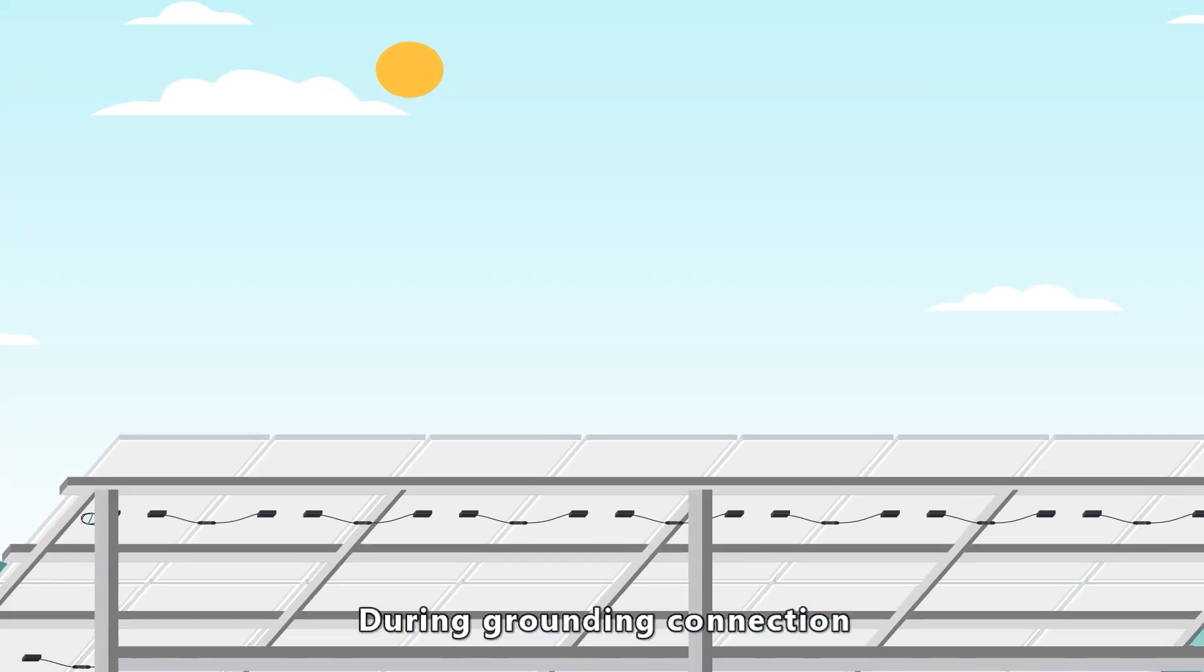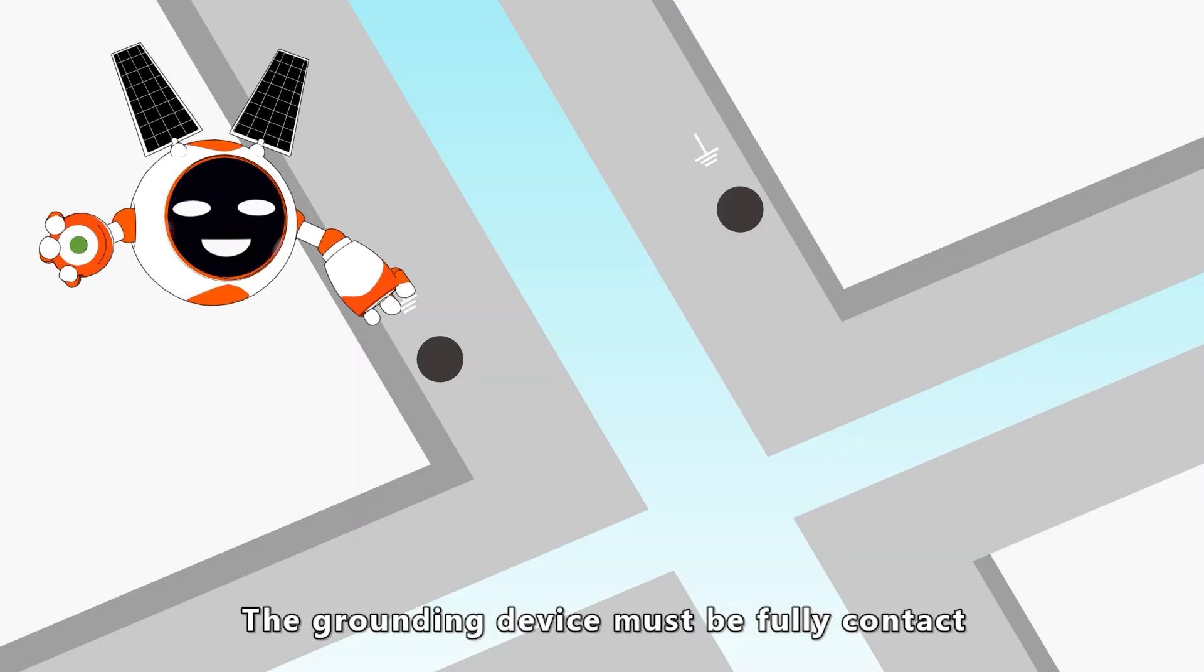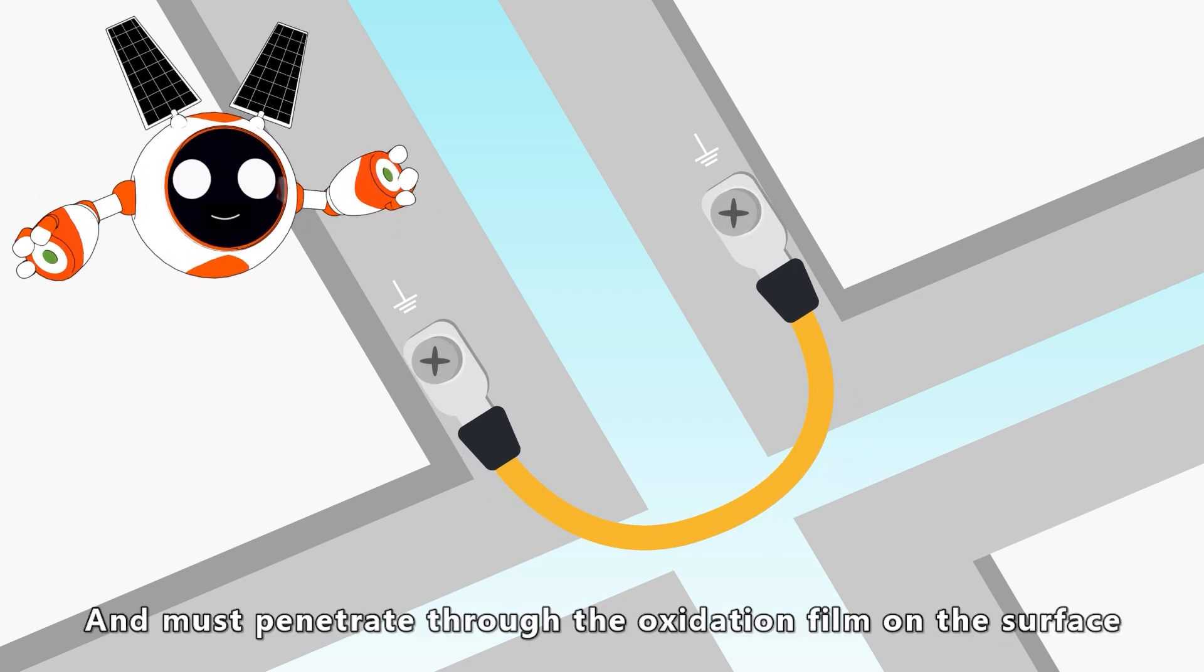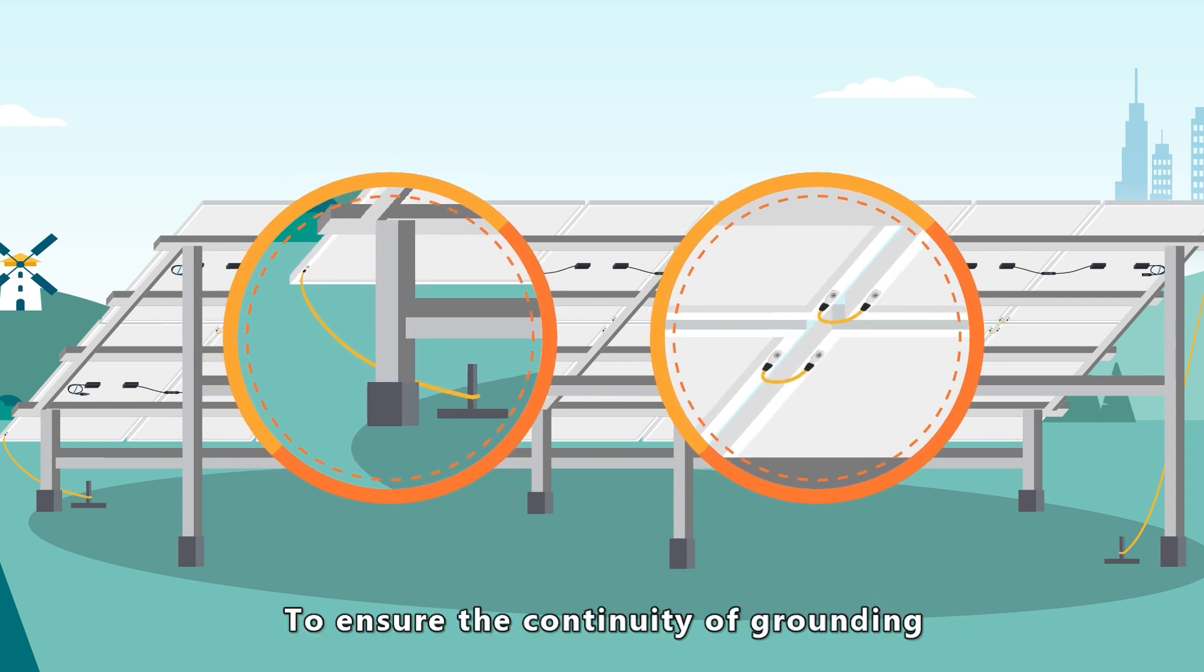During grounding connection, please use the grounding hole with grounding mark on the frame. For connecting, the grounding device must fully contact the internal aluminum alloy and must penetrate through the oxidation film on the surface to ensure the continuity of grounding.